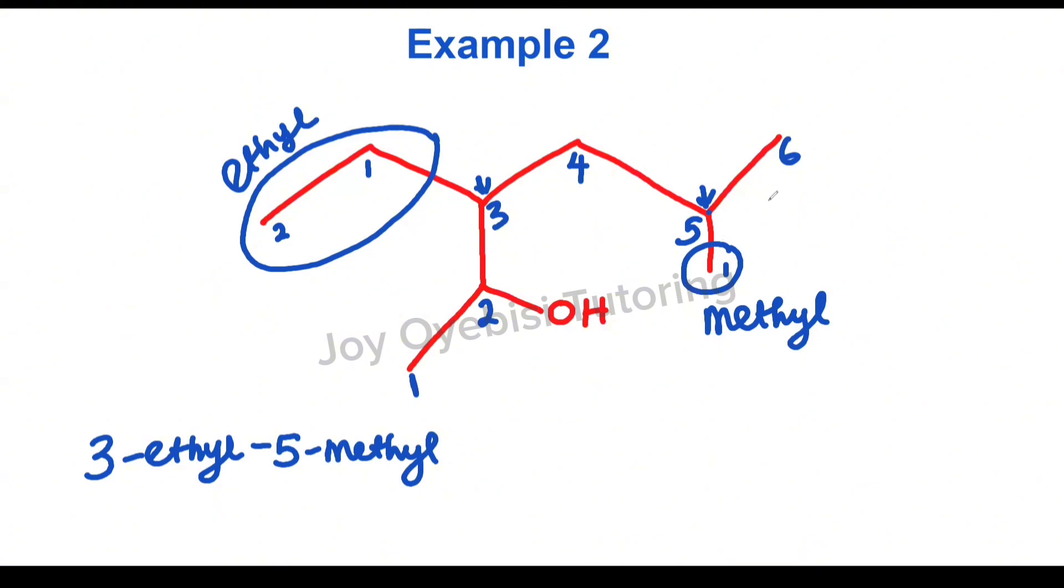And then you have six carbons as your longest continuous chain. So that would be hex and then ane, because this is an alcohol, but then get rid of the E. So it's as if you're naming an alkane. You get rid of the E, and now the position of the OH, carbon-2. And the OH itself, the suffix is OL. So the name of this compound will be 3-ethyl-5-methylhexan-2-ol.